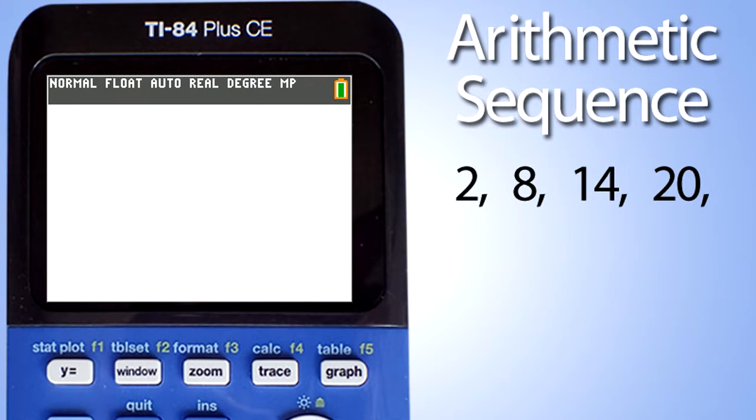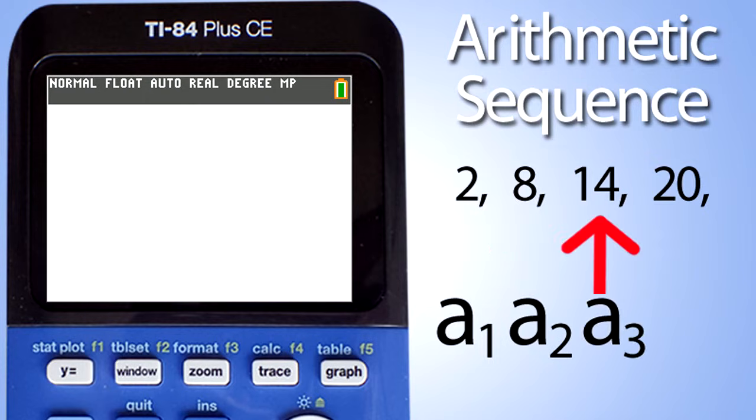In our arithmetic sequence problems, you are given a sequence of numbers such as 2, 8, 14, 20. The first term is a sub 1, the second term is a sub 2, the third term is a sub 3, and the fourth term is a sub 4. This goes on forever.